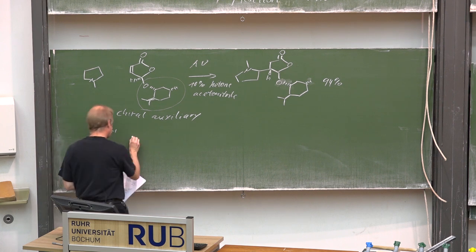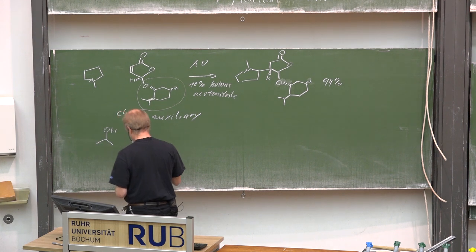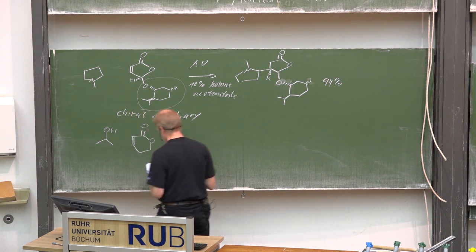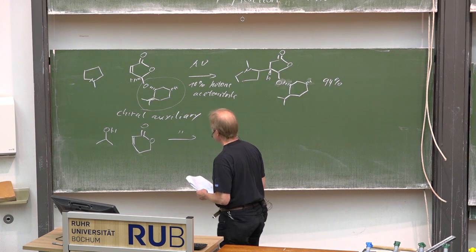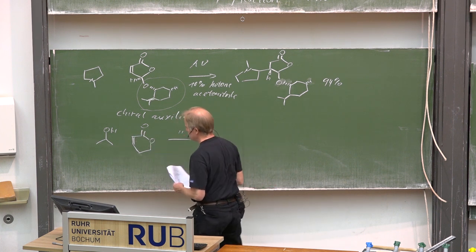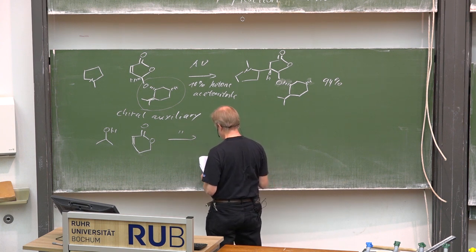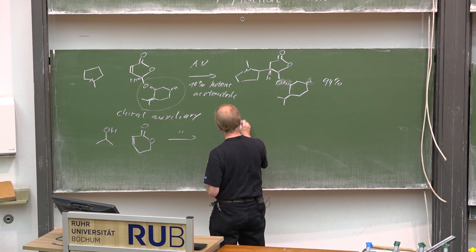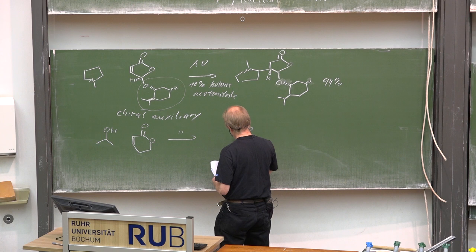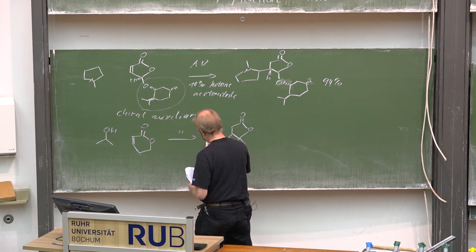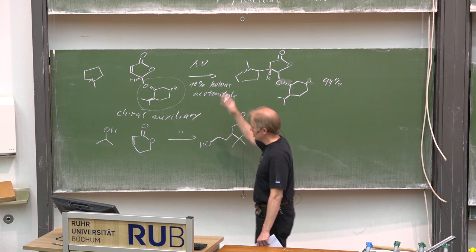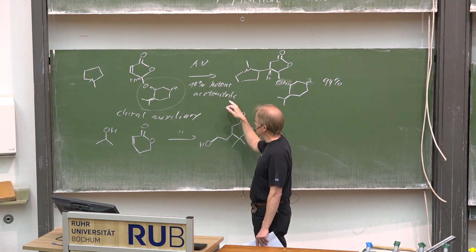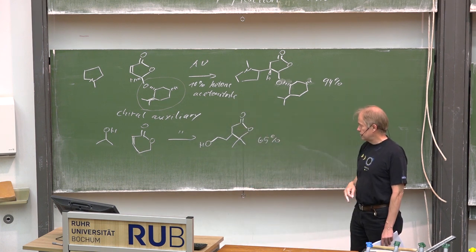Now as an exercise, please explain how from these two reagents or coupling partners this product has been formed in 65% yield. Again photochemical irradiation, a ketone present, a bit of acetonitrile. Please have a try.